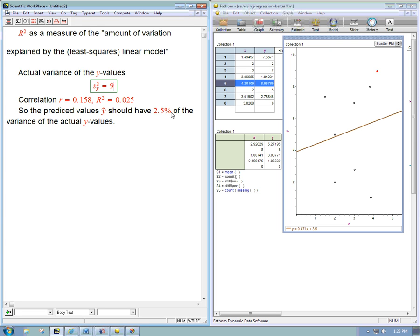And what the R-squared measures, the R-squared is 0.025 or 2.5%. What it means is simply that the predicted values of Y, that's values lying on the line, should have 2.5%, which is 1/40th of the variance of the actual Y values. Okay, so what should that be? 0.025 times 9 is 0.225. So these have a variance of 9, that's 3 squared. We should have a much smaller variance of the Y-hat values, and that should be 0.225. And I want to show you that that's really true.